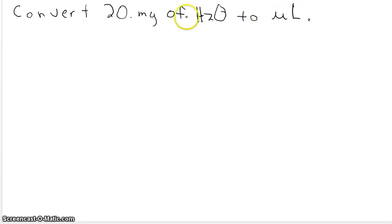The question we want to solve here is converting 20 milligrams of water, H2O, to units of microliters. The first thing you need to realize is you're starting off with grams, which is one fundamental metric base.